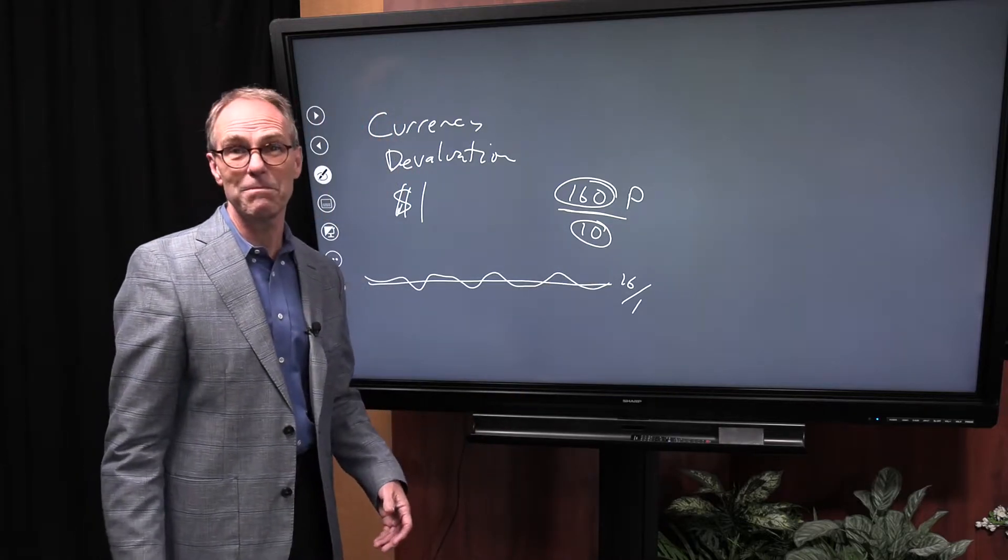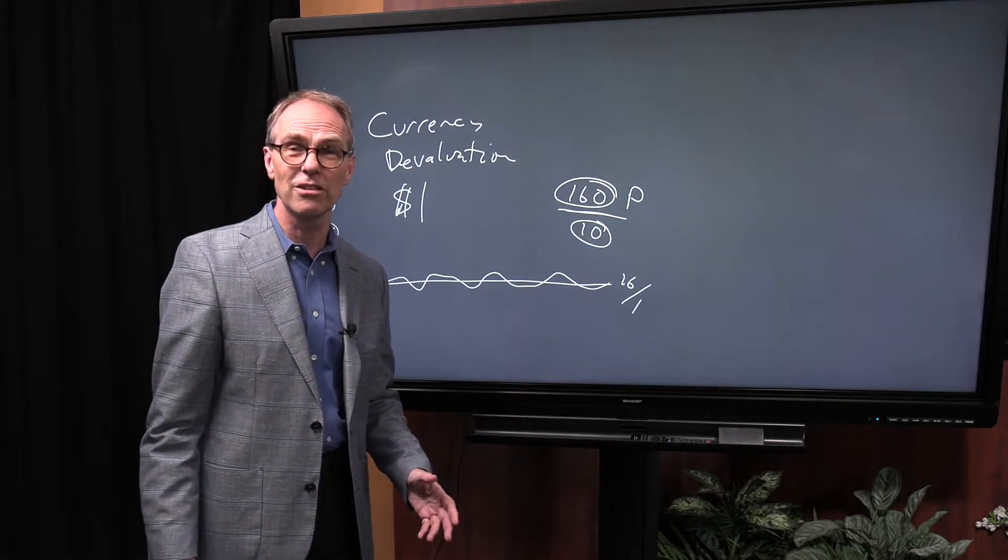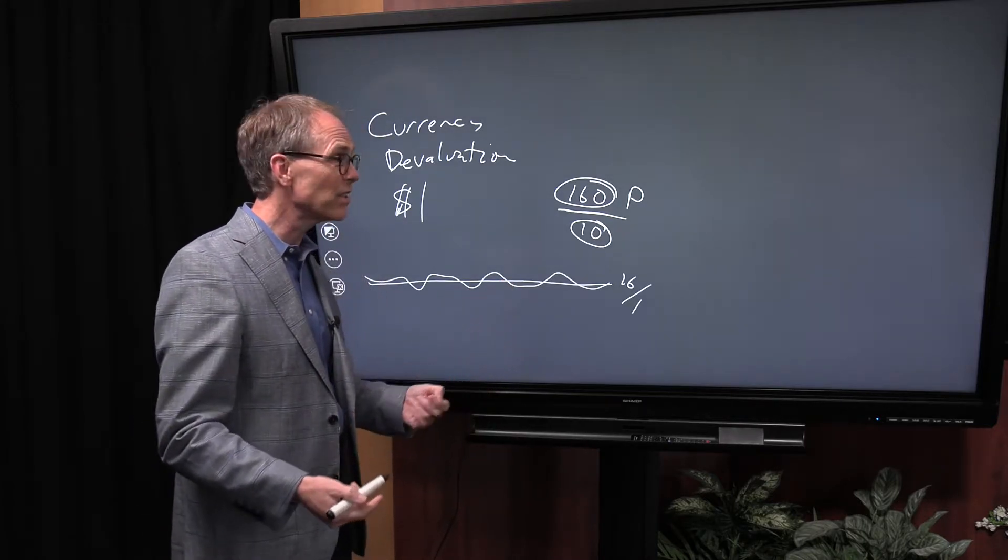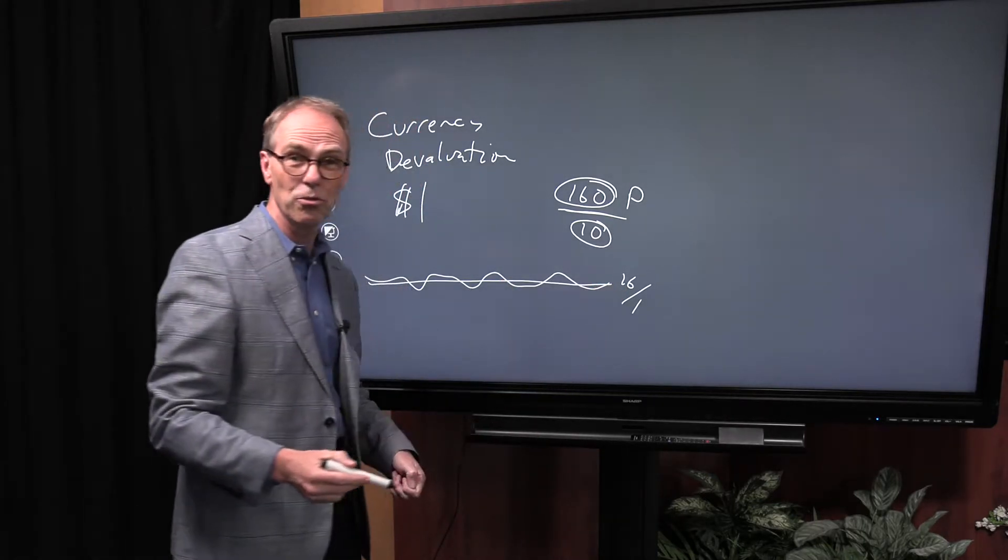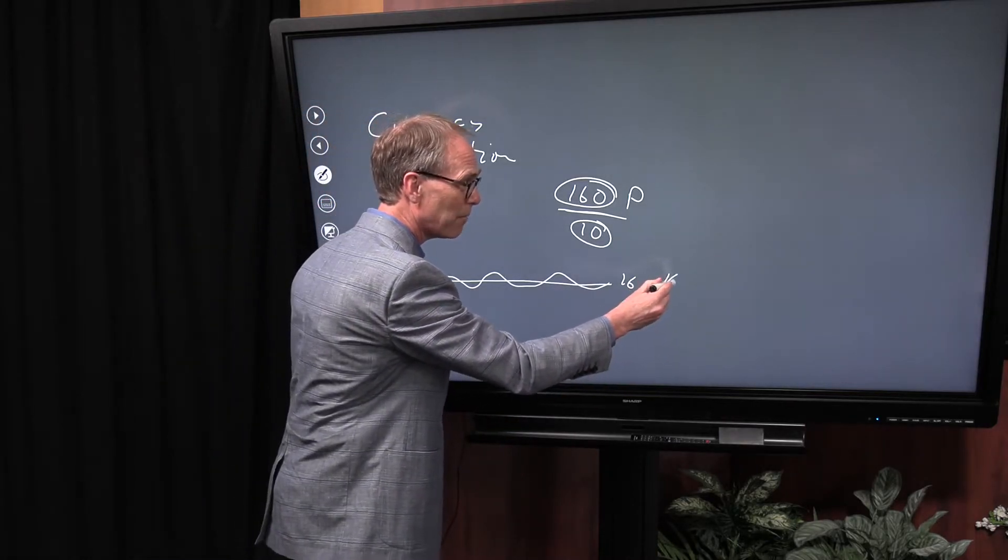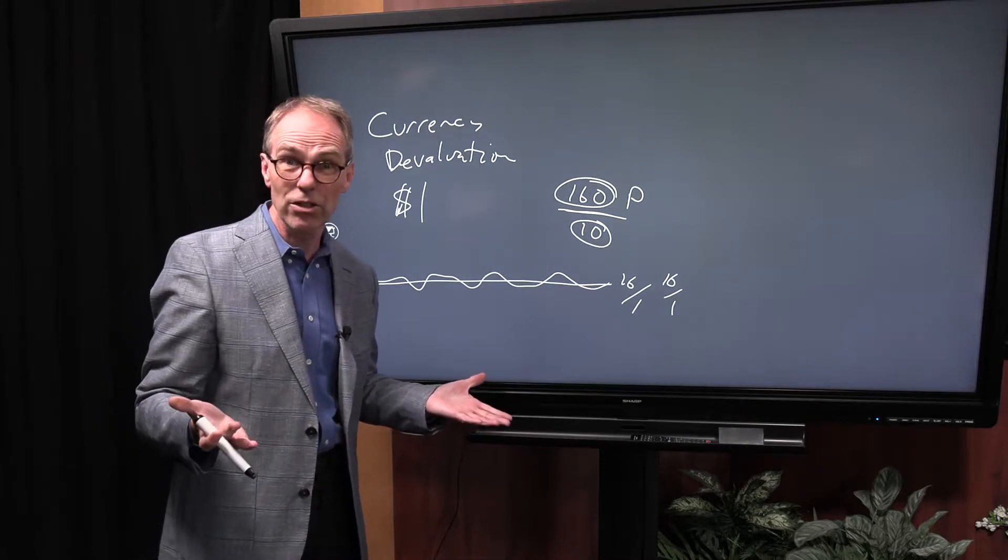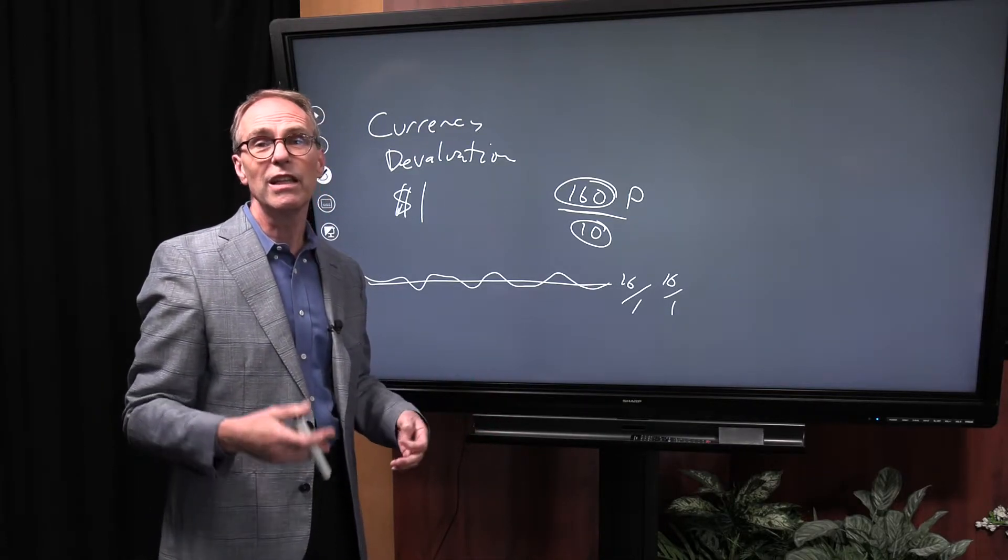Your company would no longer accept dollars. Instead of selling for sixteen dollars to one dollar of earnings, it would be sixteen wampum to one wampum. It's kind of silly, but that's literally what we're talking about.